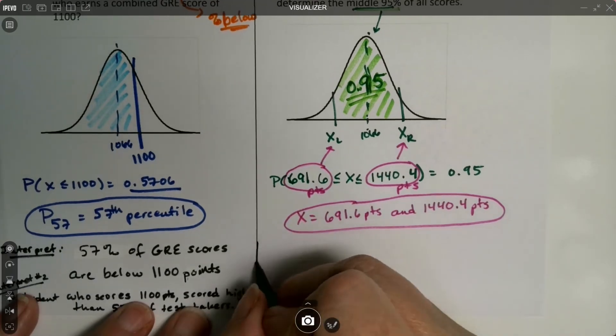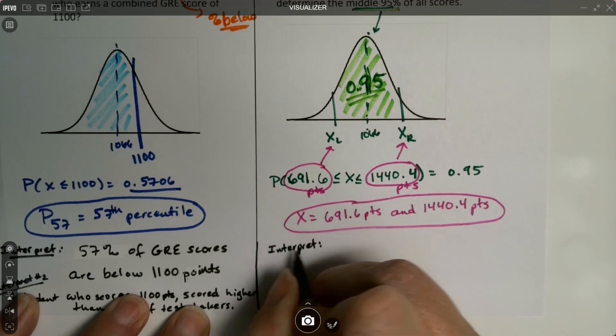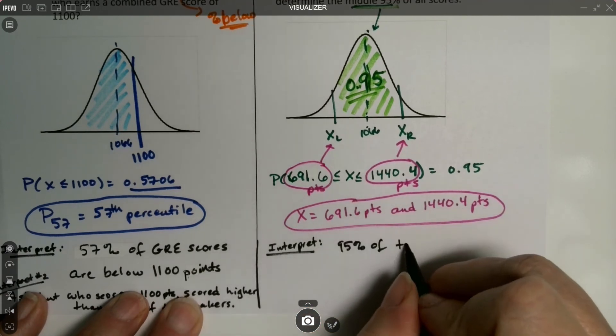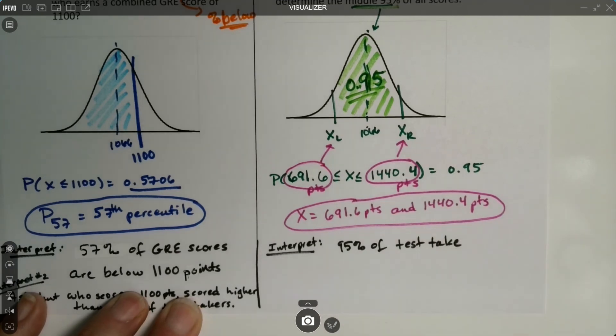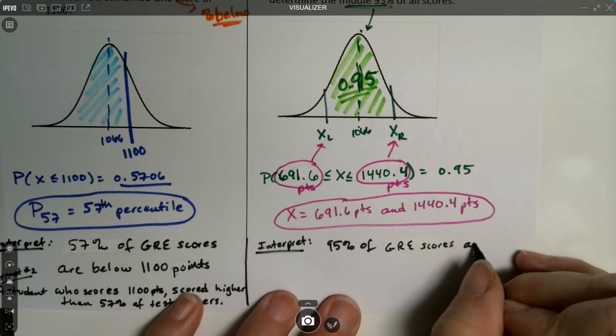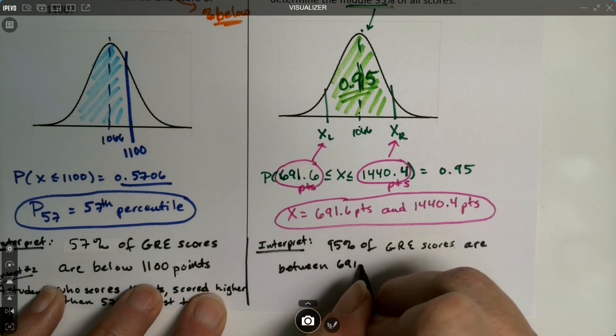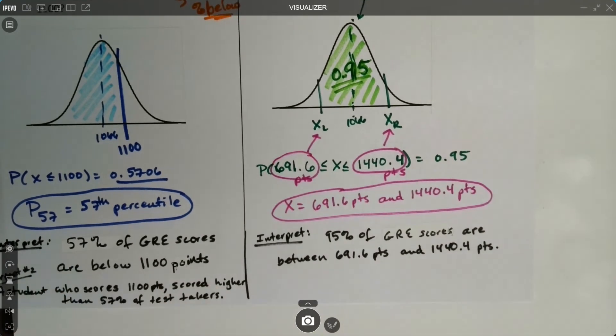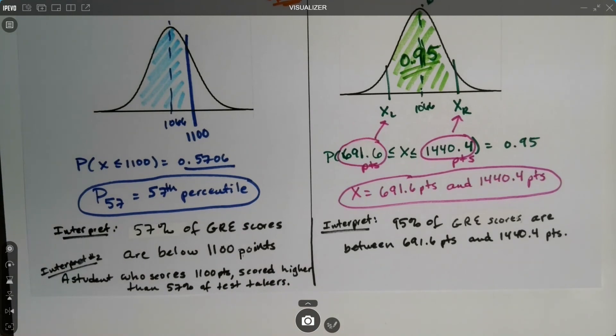So let me further interpret this. I'm going to definitely add an interpret piece to this for future. So let's throw it in there. Which would be that 95% of test takers, or you could say 95% of GRE scores, it doesn't matter. Put it in context. GRE scores are between 691.6 points and 1440.4 points. Done. I'm going to add that interpret piece for future semesters and I know it's in your worksheets, but it's actually kind of a review. We already learned how to interpret these pieces way back in section 7.1. So it's just a refresher of that same probability slash proportion way of interpreting these values.